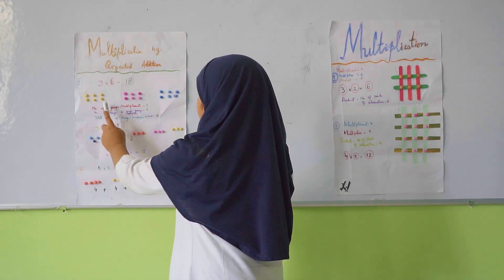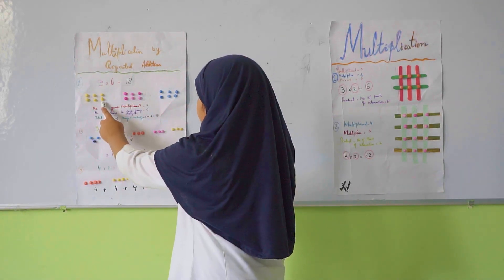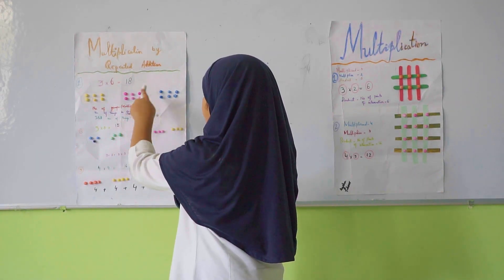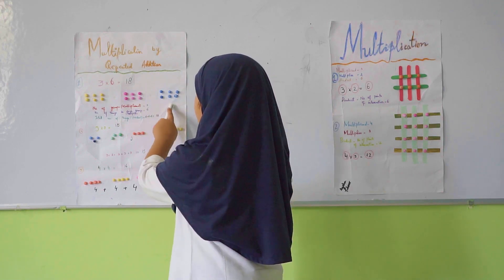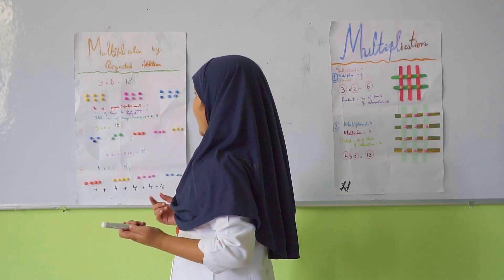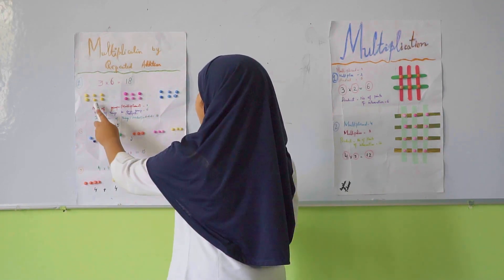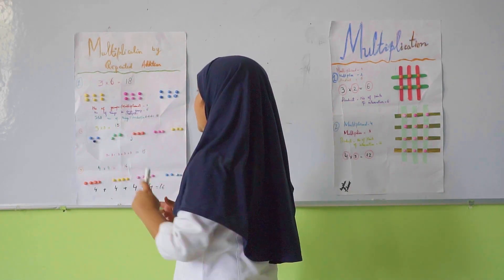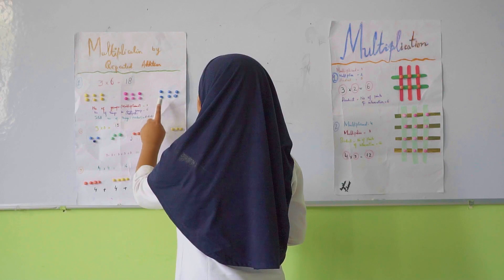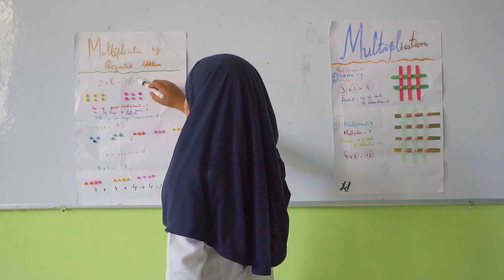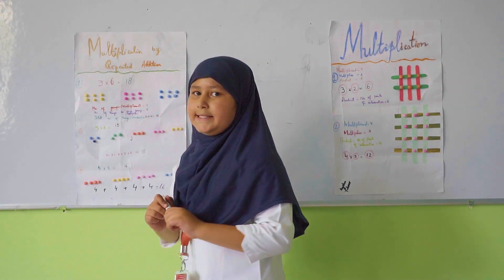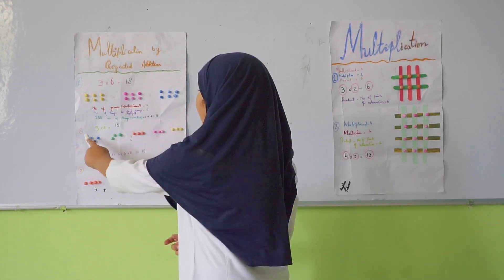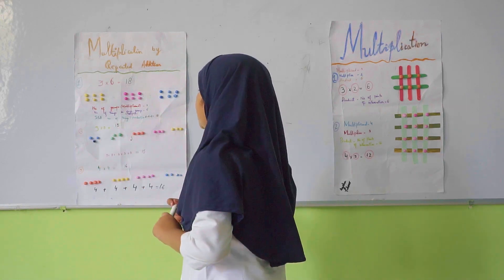Now let's see what the product is. 6 in one group, 6 in one group, 6 in one group. Let's add them. 6 plus 6 is 12, and 12 plus 6 is 18. So our product is 18.